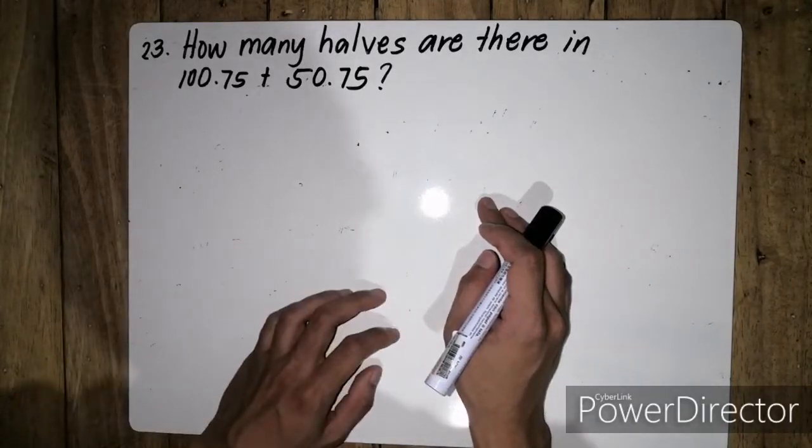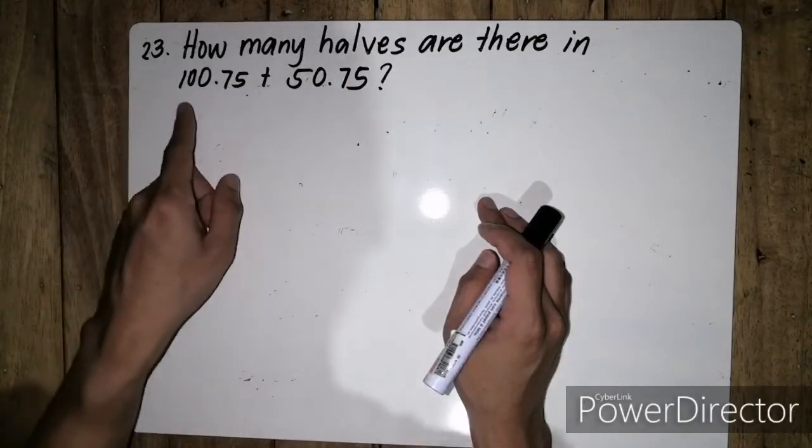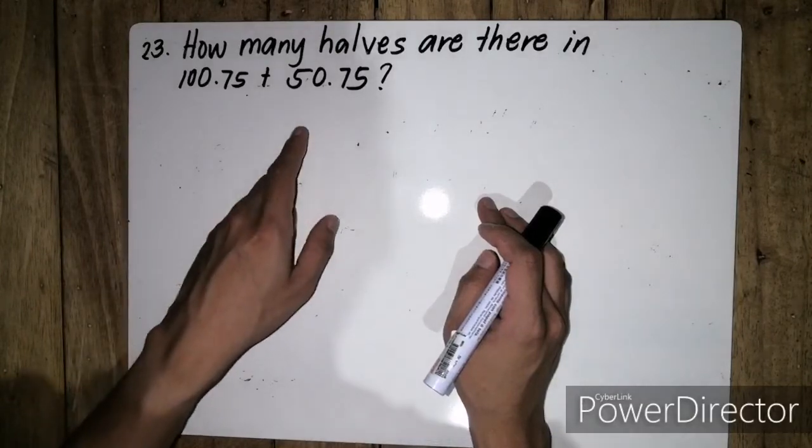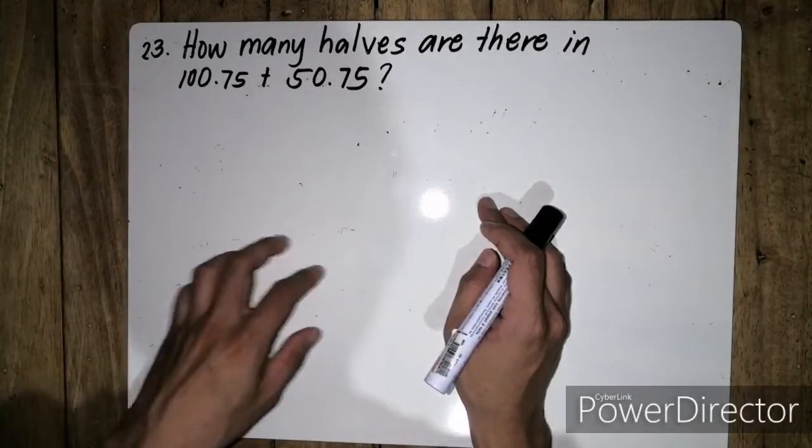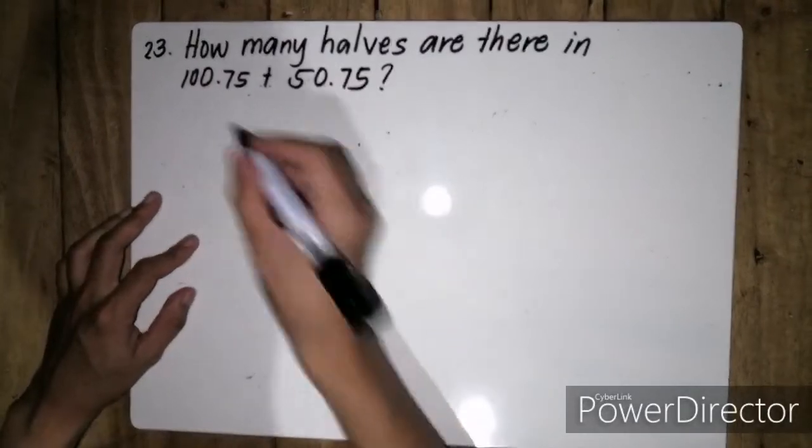The problem is asking how many halves are there. That means we divide the sum of 100.75 and 50.75 by one half. So the first thing we need to do is add these two numbers.